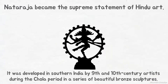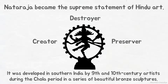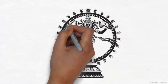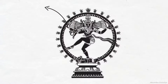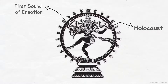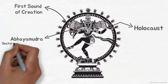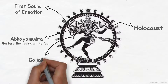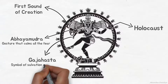Nataraj as a symbol is a marvelous invention combining Shiva's role as creator, preserver and destroyer in a single image, and each of the elements in the image has a unique meaning. The damaru Shiva holds in his upper right hand is said to make the first sound of creation, the heartbeat of the universe. The divine fire on the upper left hand signifies the holocaust. With his lower right hand he makes Abaya Mudra, the gesture that calms all fear.